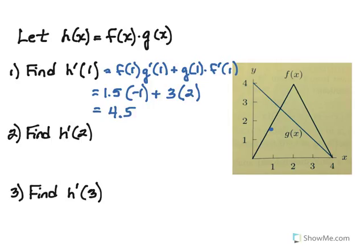Now we want h prime of 2. Using the product rule again but at x equals 2: notice that x equals 2 is the vertex of the upside-down v, so we cannot take a derivative of f there. Without doing any further work, we know h prime of 2 does not exist, because of that cusp at the top of the vertex of the f function.